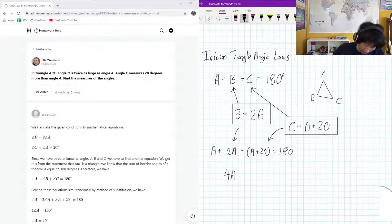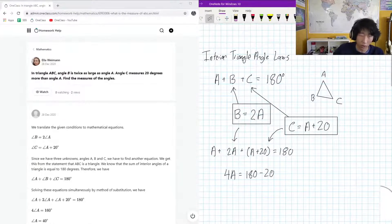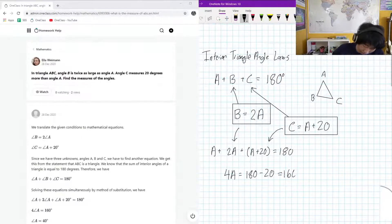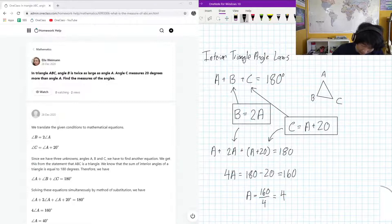So 4A is equal to 180 minus 20. You see the 20, this 20 term is brought to the other side, so we subtract it. That's equal to 160. And A, we know that that's just got to be 160 divided by 4. That's got to be 40 degrees.